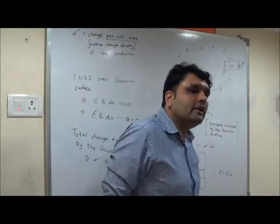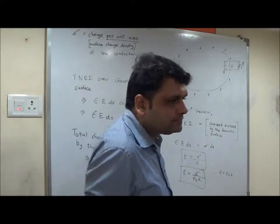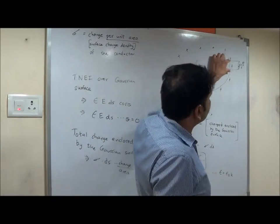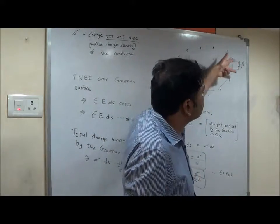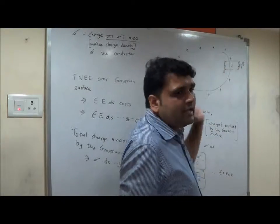At point A, I want to find out electric intensity using Gauss theorem. Consider a cylindrical Gaussian surface. You can see this cylindrical Gaussian surface such that its axis is along AB.